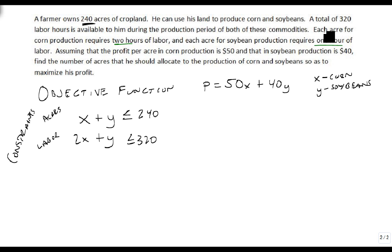Now there's two more constraints. We cannot produce negative amounts of corn or negative amounts of soybeans. So x is going to have to be greater than or equal to zero, and y is going to have to be greater than or equal to zero. So these are just our real-world pieces. But this becomes our system of constraints.